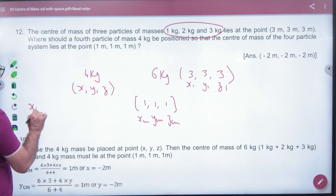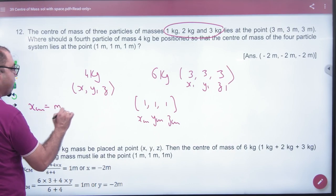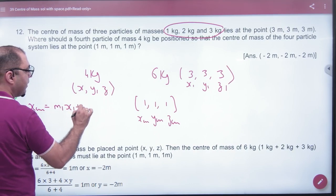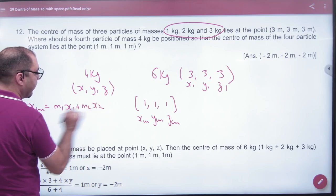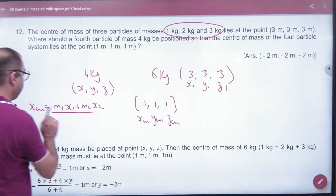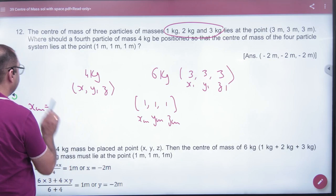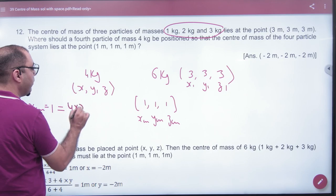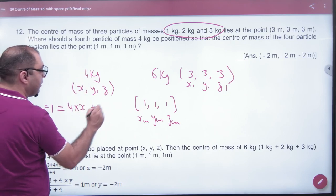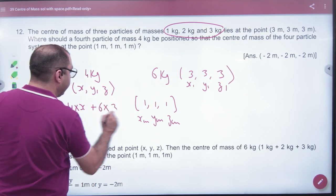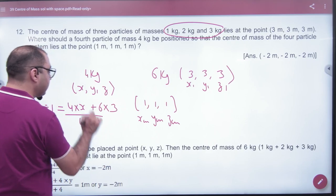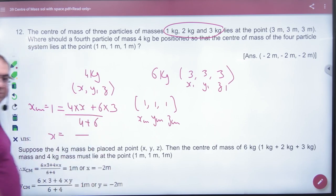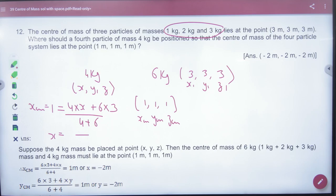So, if I say the first equation, which will be equal to M1 into X1 plus M2 into X2 divided by M1 plus M2. So, rather, let's put value in the same way. So, how much is the value of the mass? What is the value of the mass? M1 means 4 into X plus 6 into 3 divided by 4 plus 6. So, what is the coordinate? X coordinate. This is the rule sign.